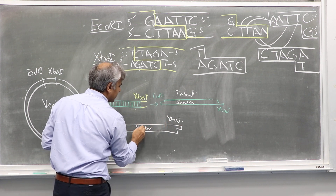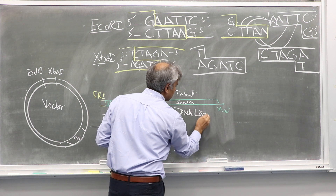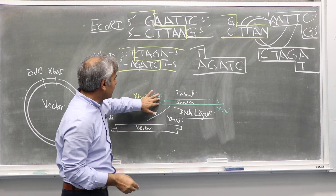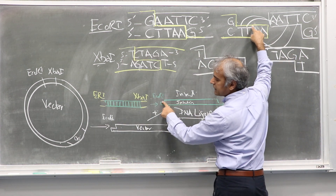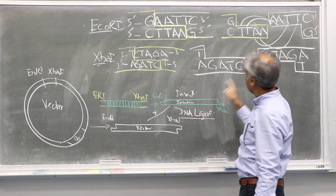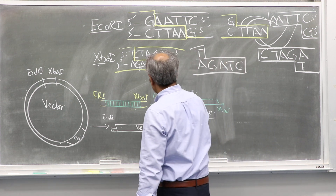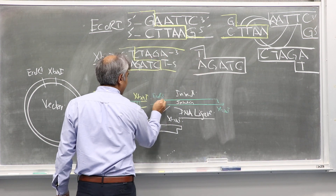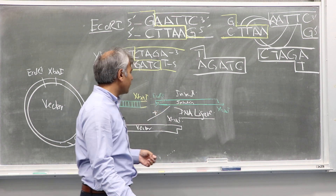Once we mix this insulin insert digested with EcoRI with the vector digested with EcoRI and XPA1, we mix them together in the presence of DNA ligase. This enzyme glues them together because these are sticky ends. DNA ligase makes the rest of the job by repairing the phosphodiester bonds.